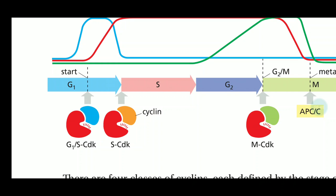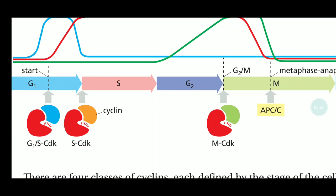The S-CDK cyclin complex initiates S-phase processes such as DNA replication. The M-CDK complex initiates the transition from G2 to M phase — the G2/M transition — and checks whether the DNA is completely replicated and whether there are any mutations or defects in the replicated DNA. This is regulated by the M-CDK. Then, the APC — anaphase-promoting complex — inhibits M-CDK action by causing degradation of M-cyclin and initiates the metaphase-to-anaphase transition.